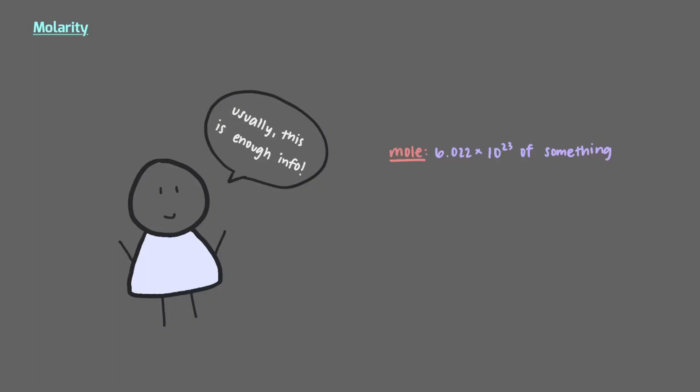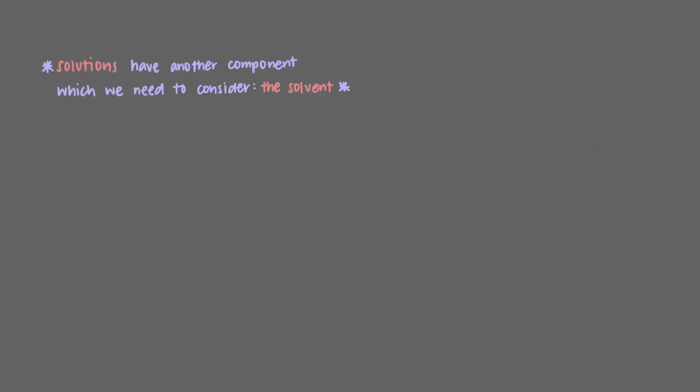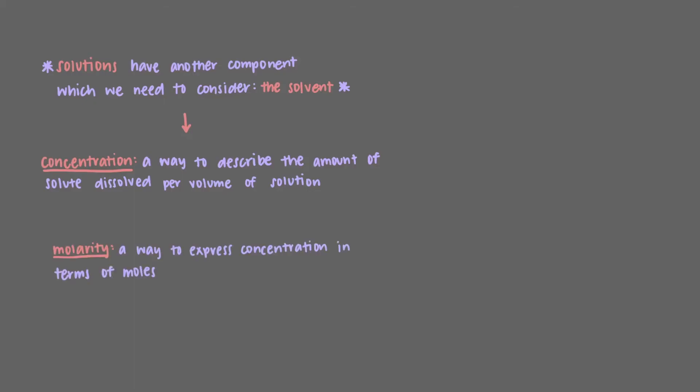Usually, this would be enough information to describe the quantity of a certain atom or molecule that we have. However, in solutions, we have another component which we need to consider: the solvent. Because of this, when we describe solutions, we use concentration. Concentration is a way to describe the amount of solute dissolved per volume of solution. In chemistry, molarity is a common way of expressing concentration because it allows us to express the amount of solute in terms of moles. So molarity is equal to the number of moles per volume in liters of solution.